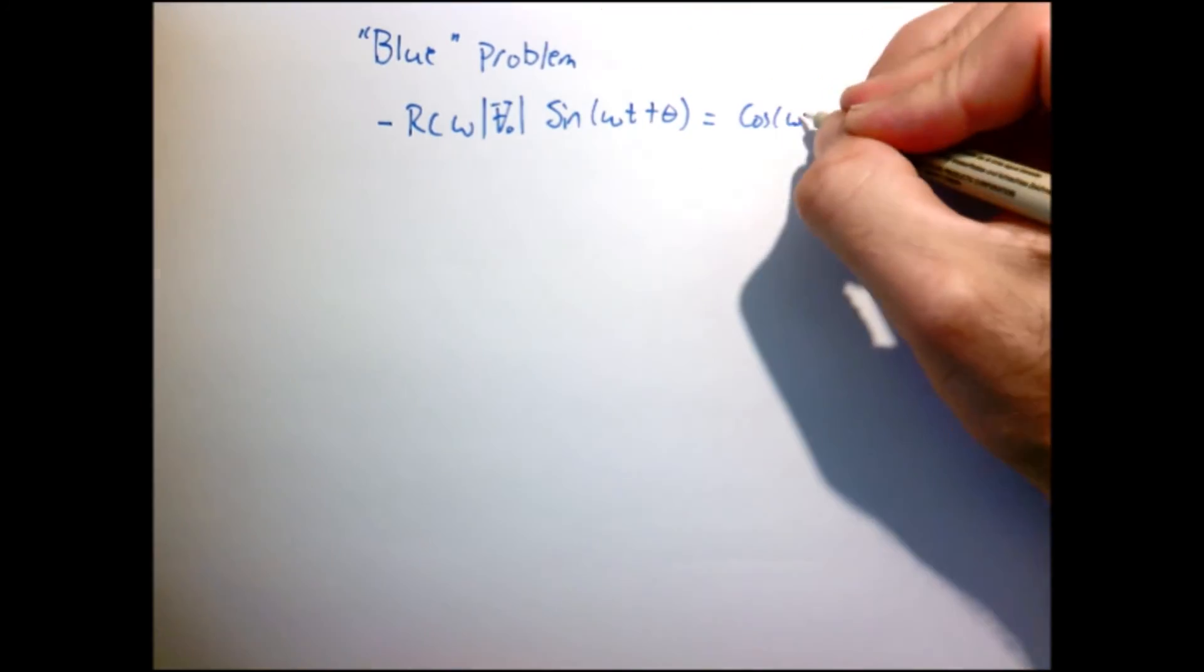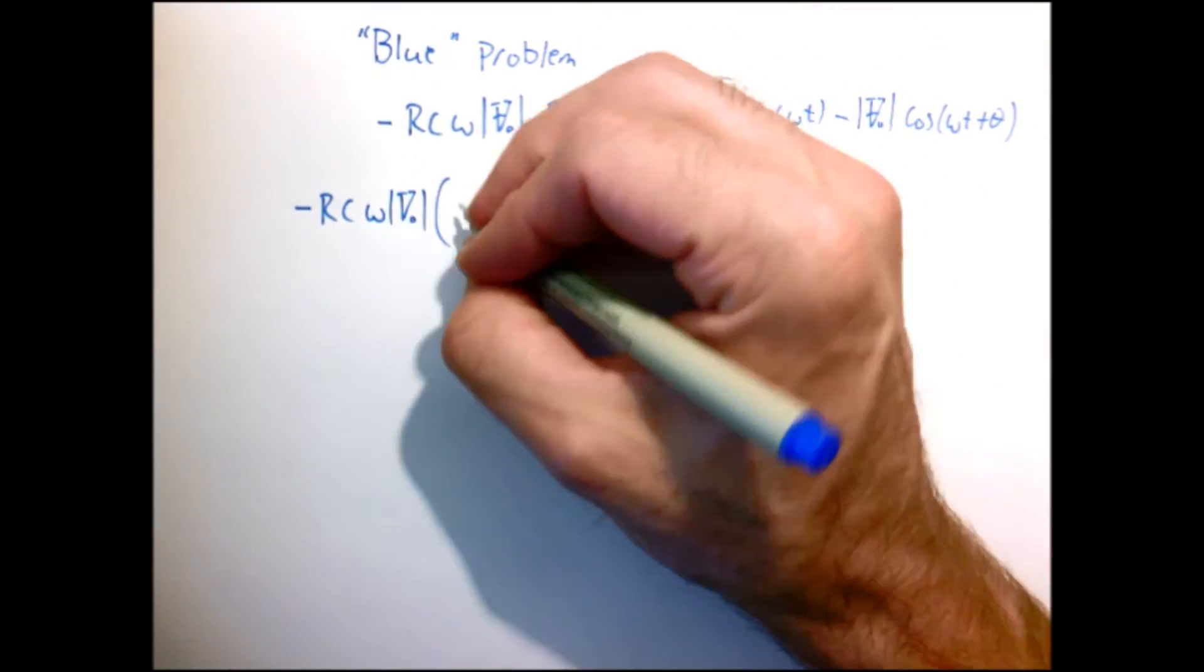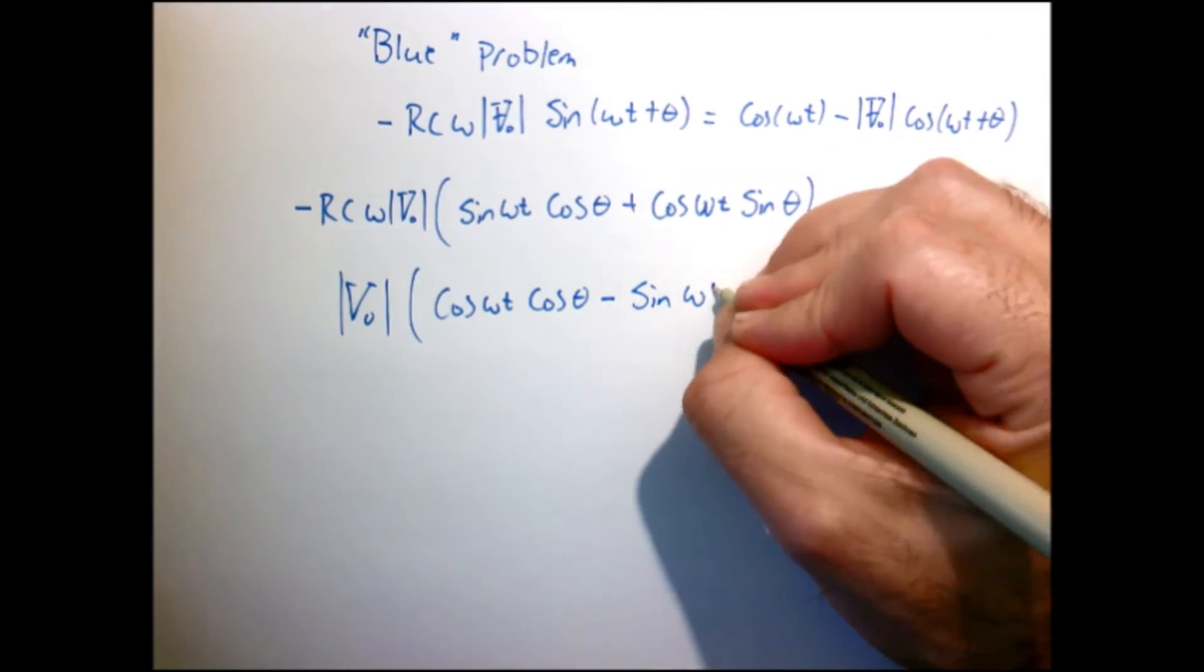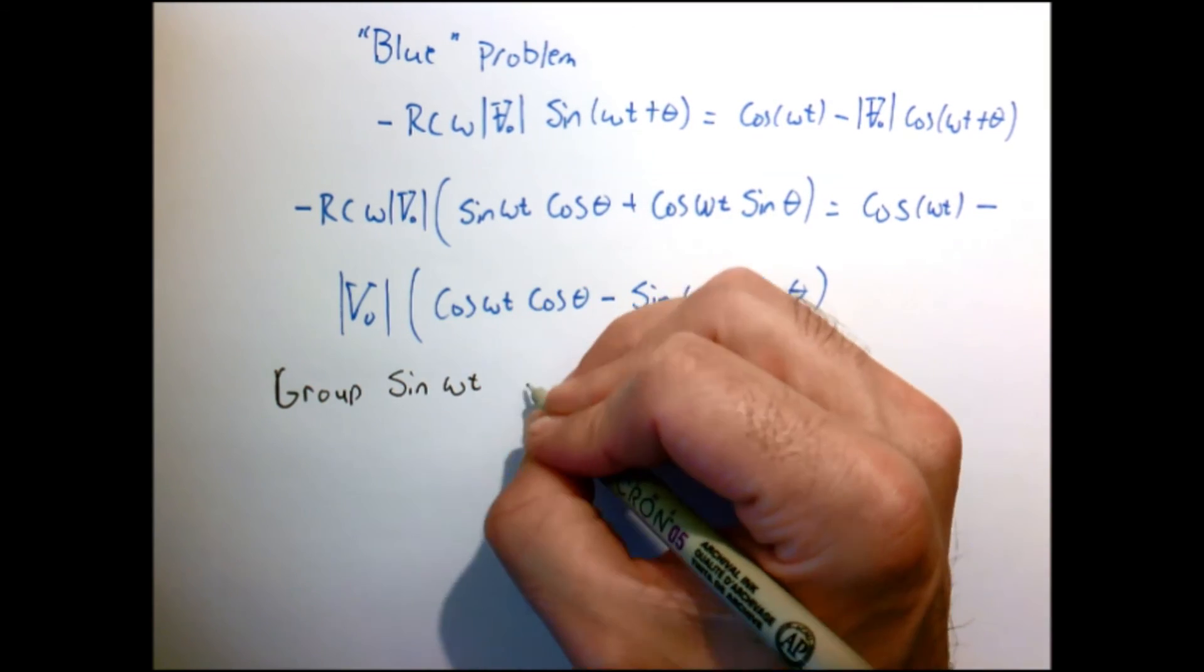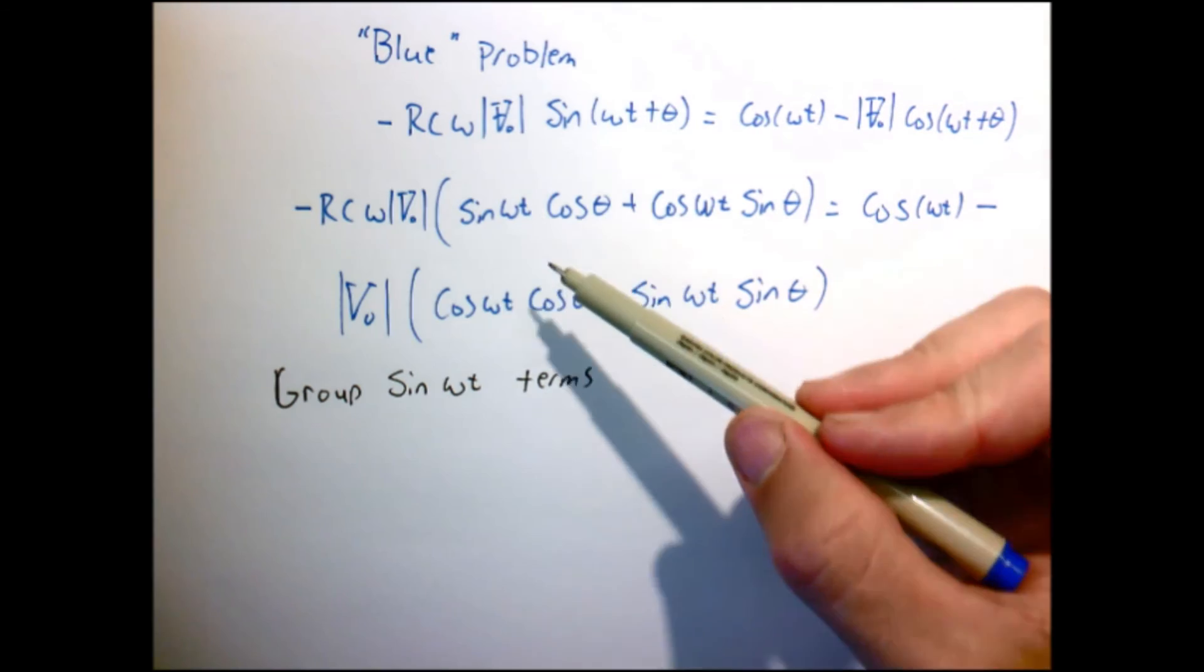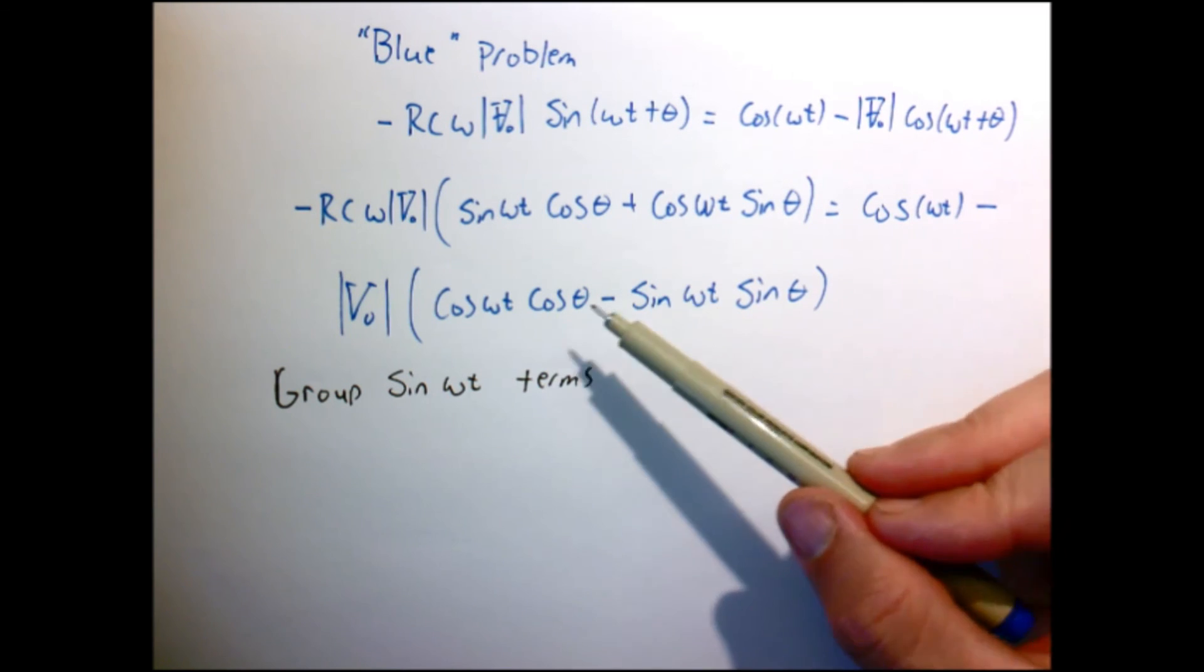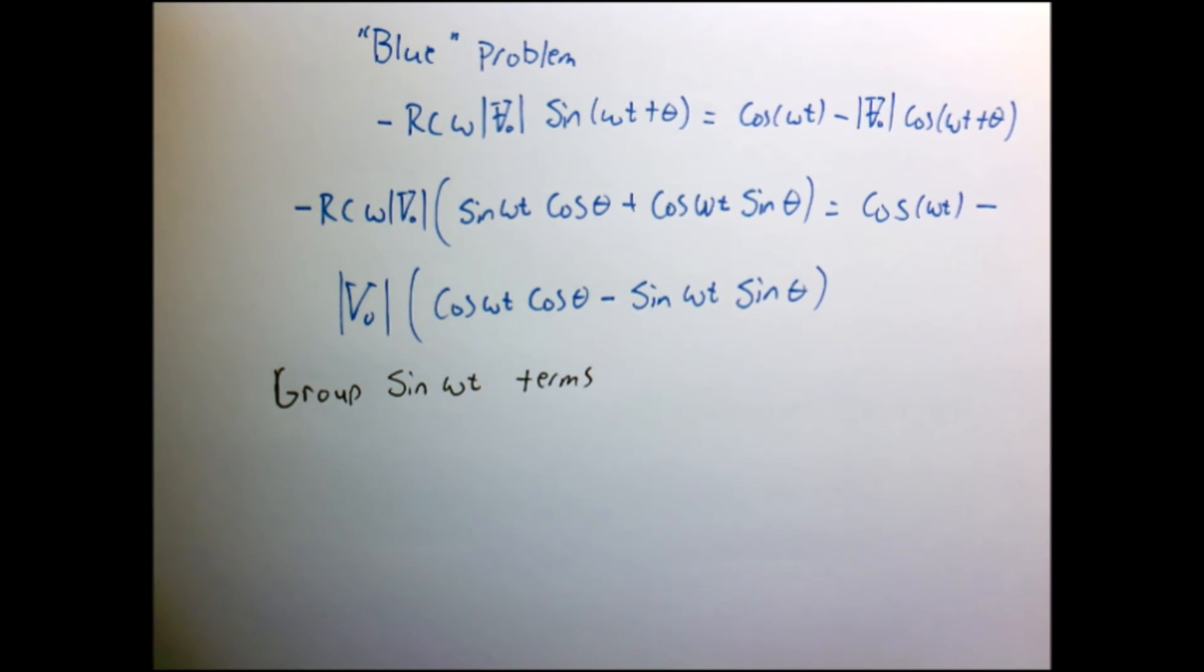So this is the blue problem that we wanted to solve. So let's just expand these terms out using our trig identities just like we did before. So if I expand all those things out. So let me group the sine of omega t terms because remember when we did this kind of analysis before, we said in order for this equation to be true, all the terms that multiply sine omega t must be zero.